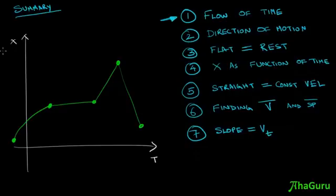stopped for some time, then went up and then came back. The second thing we learned was that if this line is flat, that means the body has not moved, because as time is changing, X remains the same, and so that means the body is at rest.